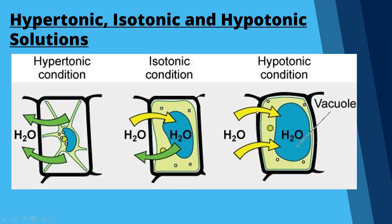In a hypotonic solution, like pure water, water moves into the cell via osmosis and causes it to swell. If this were a red blood cell or animal cell it would burst — undergoing cell lysis — but because a plant cell has a cell wall, that keeps the cell membrane boundaries in place and we say the cell has become turgid.